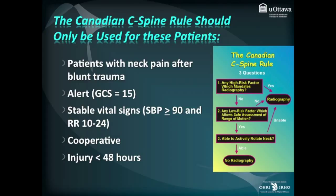The rule is intended only for patients who have neck pain after blunt trauma. So if you have an alert stable patient who has no neck pain then you do not need to worry about a C-Spine injury and they don't even qualify for this rule. We define alert as GCS 15, stable vital signs meaning that they're not a multiple trauma case. They have to be cooperative and the injury has to have occurred in the last 48 hours.